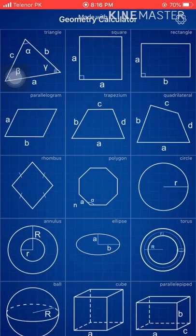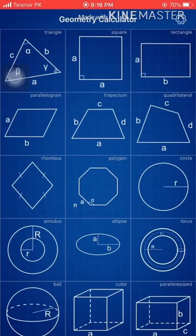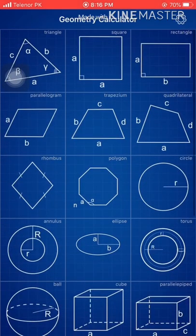This app is basically used to work out properties — the area and volume of different types of geometric shapes. When you open it, you can see different types of geometric shapes; some of these are 2D and some are 3D. Let me start — I'm going to begin with the square first.